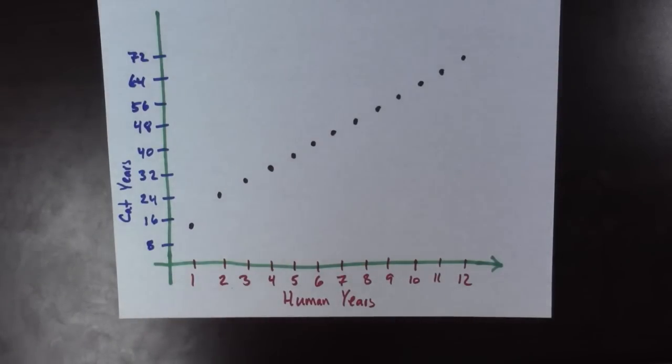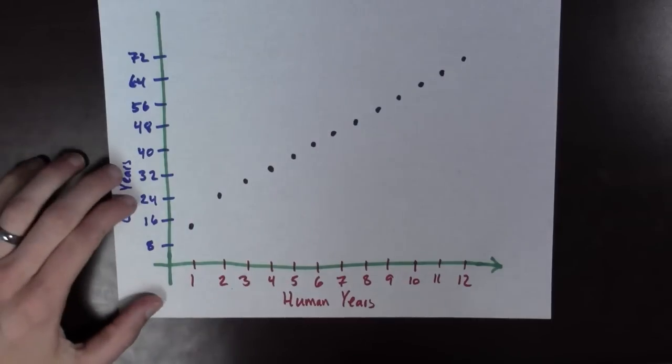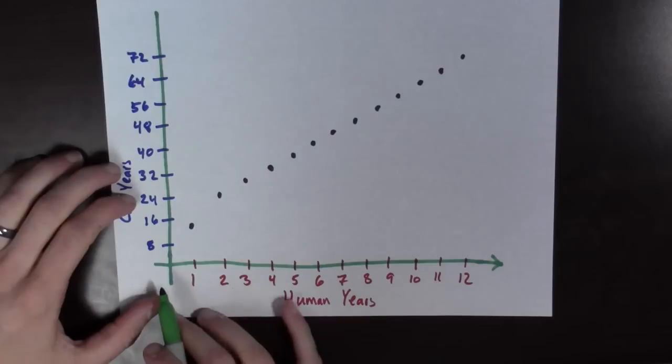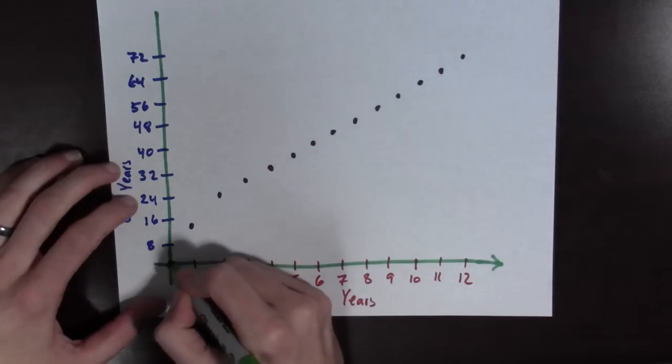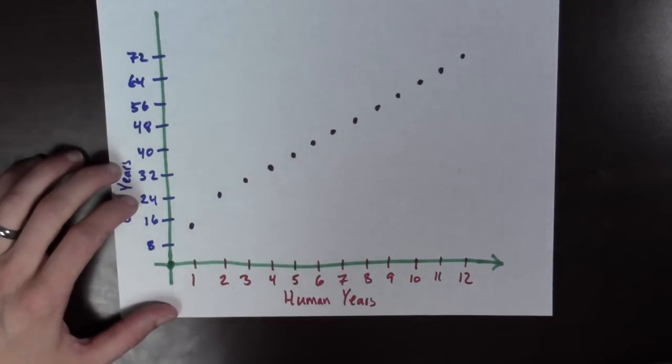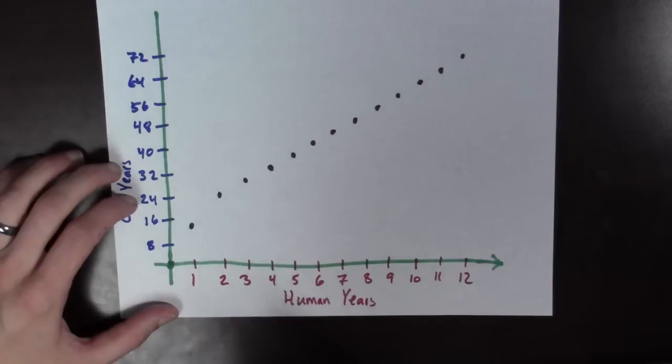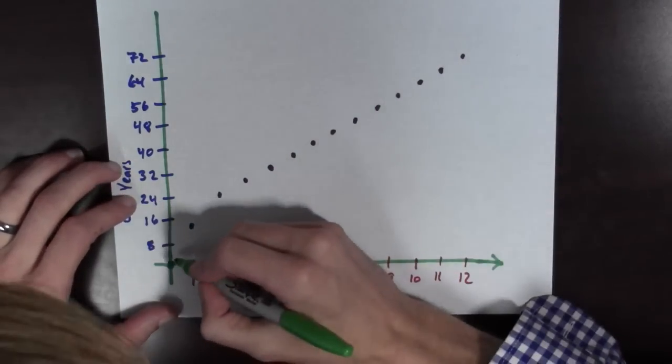So, here we have our table, and it's all plotted. The first thing I should point out is that if a cat is zero human years old, then it's zero cat years old. So, we should go ahead and mark that point. And now, I don't know about you, but I just can't help myself. I want to connect the dots. So, let's go ahead and do it. Let's connect the dots.